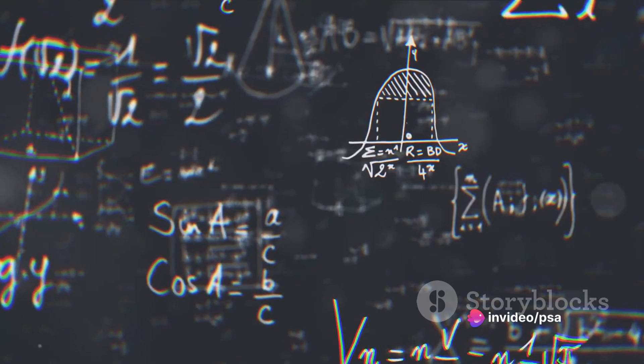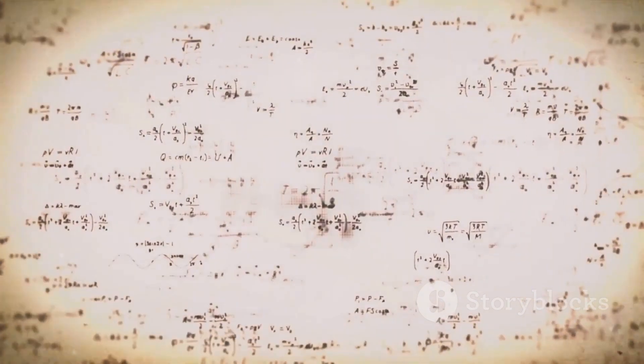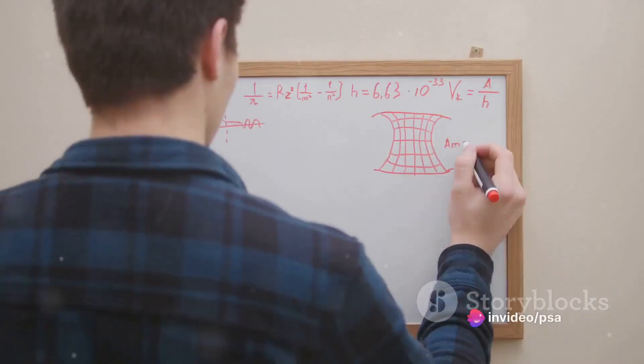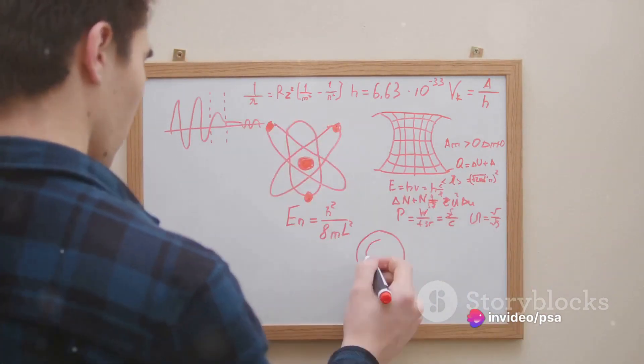This allowed Gauss to make his first groundbreaking mathematical discovery at the tender age of 15. He conjured up a remarkable proof that a regular polygon with 17 sides can be constructed using only a compass and straight edge, a feat that had been unsolved for more than 2,000 years.